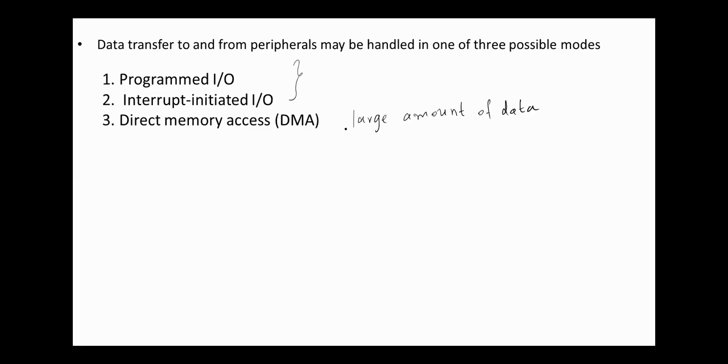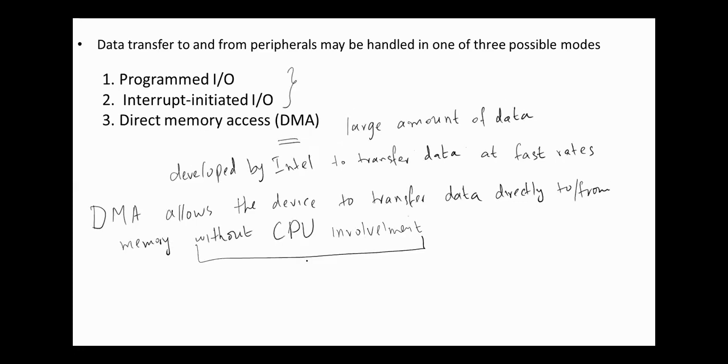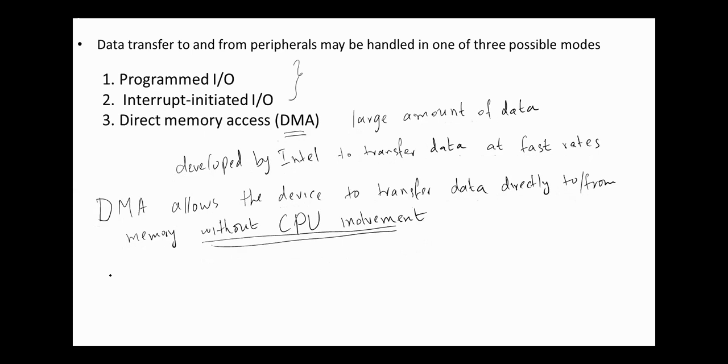For transferring large amounts of data, DMA is used. DMA was developed by Intel to transfer data at fast rates. DMA allows the device to transfer data directly to or from memory without CPU involvement. The unit that controls the details of transfer is called the DMA controller.